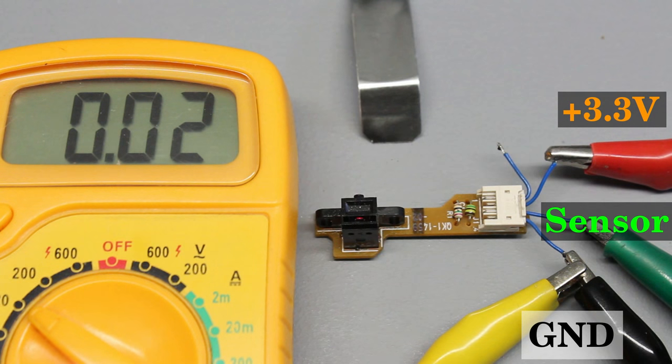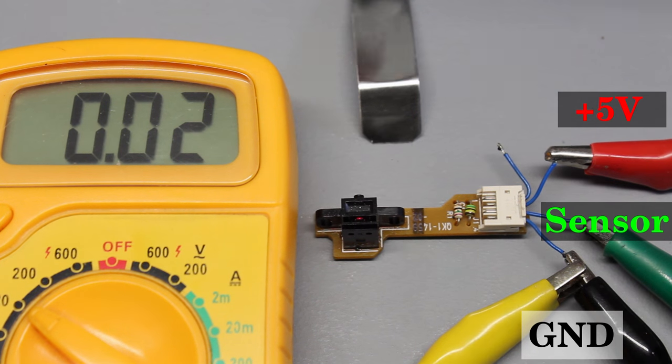If you don't get clear signals close to 3.3V when blocked and close to 0V with the metal sheet removed, try 5V. If you need 5V in your application at all costs, you can try 5V even after a successful test at 3.3V.